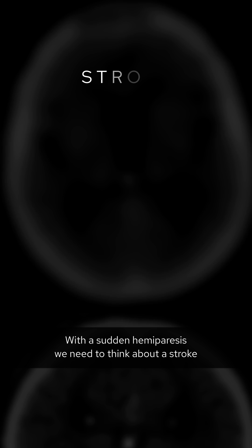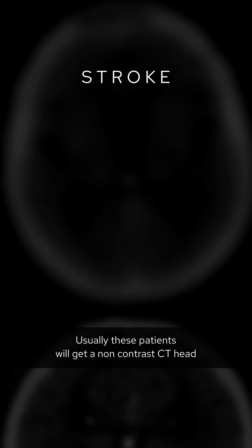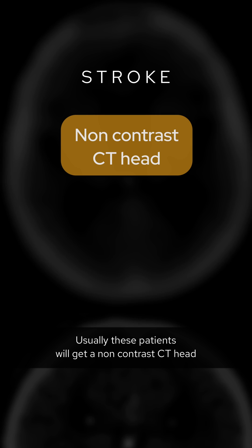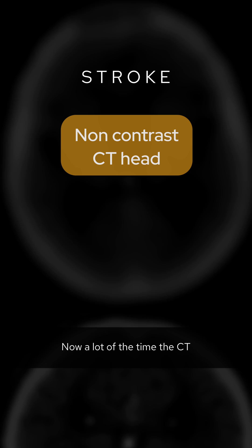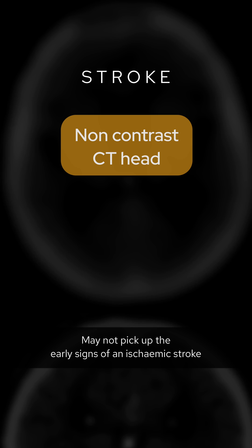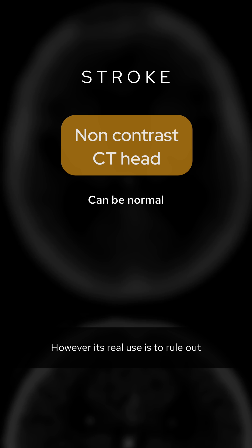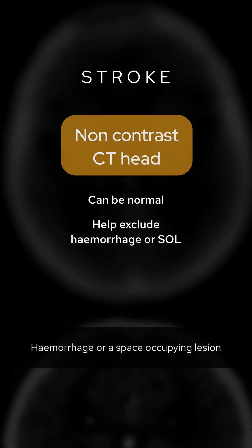With a sudden hemiparesis we need to think about a stroke. Usually these patients will get a non-contrast CT head. Now a lot of the time the CT may not pick up the early signs of an ischemic stroke. However its real use is to rule out that the symptoms are due to hemorrhage or a space-occupying lesion.